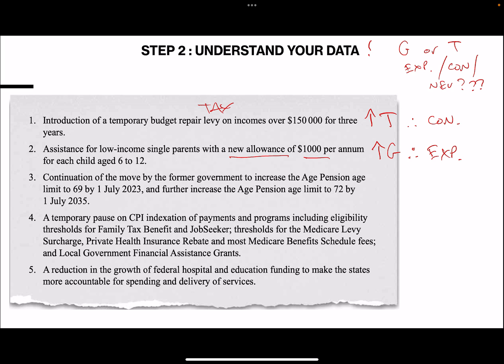The third one's tricky. The simplest way to think about it is that they're going to increase the age pension eligibility to 69 and then to 72. So we'd have more people working. If you're working longer, the government doesn't have to pay age pension to people aged 65 to 69, and then 69 to 72. So in effect, the easiest way to break this one down is that it's a drop in G - aggregate G. What will happen is that with the age pension age rising, there's less money going to pensioners overall. So we'd say that's contractionary.